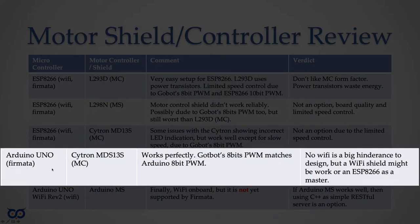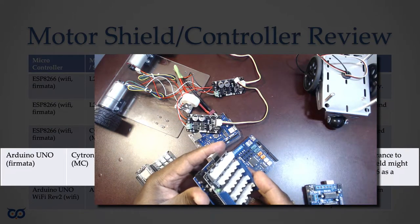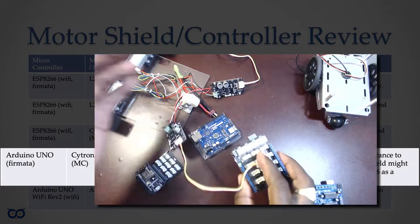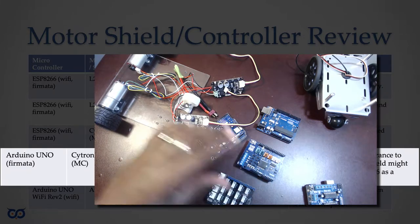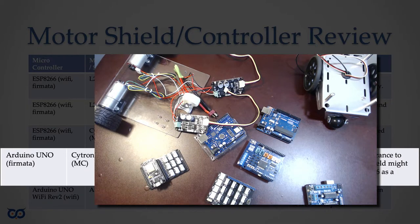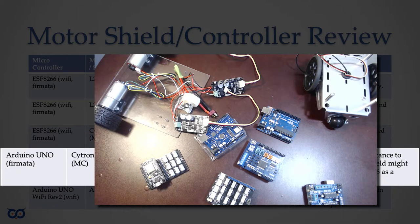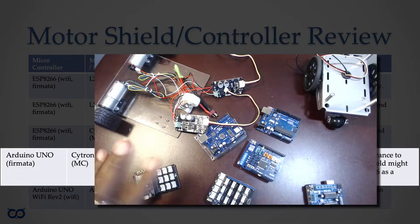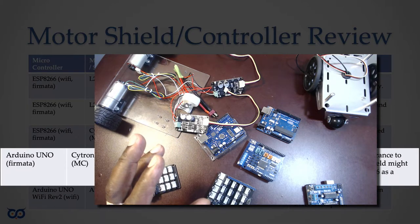The fourth combination was an Arduino Uno with a Groove shield and the Cytron MD13S boards connected directly. The Arduino's PWM is 8-bit, and that works perfectly with Firmata. I was blown away — the speed control was incredibly smooth, no error LEDs, no weird double-LED lighting. I'm super happy with the Arduino and MD13S combination.